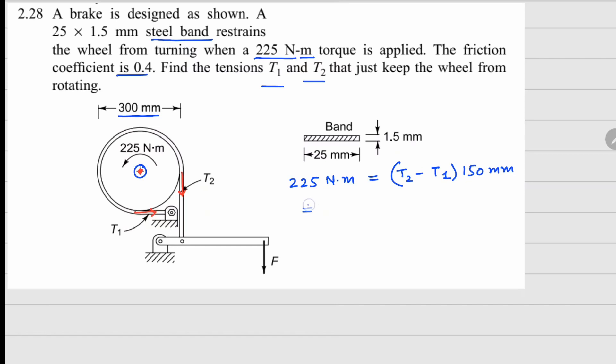This equation gives us T2 - T1 = 1.5 kN. This is the first relationship.